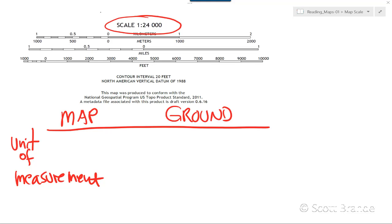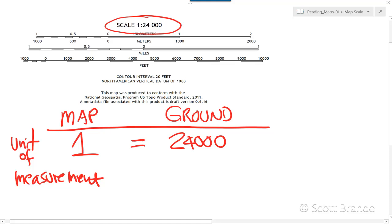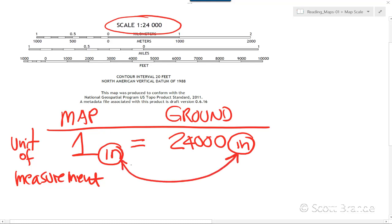One represents the unit of measurement on the map, and that measurement is made with your ruler. That is equal to 24,000 of those very same units on the ground. The critical understanding here is that whatever unit of measurement our ruler is in for making measurements on the map, that is going to be the very same unit we convert from the map to the ground. That's how we get started in calculating how far apart two objects are on the ground using the fractional scale.